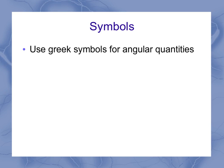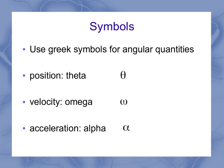Now for our symbols, we want to use the Greek symbols for our angular quantities. This is almost across the board exactly, which means position is going to be the Greek letter theta. Velocity is going to be the Greek letter omega, and acceleration is going to be the Greek letter alpha.